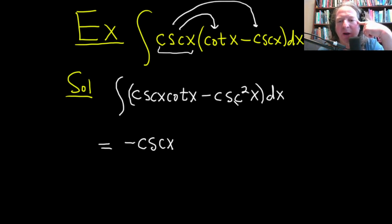And then here, what's a function whose derivative is cosecant squared? Well, the derivative of cotangent is negative cosecant squared. So this is going to be plus cotangent of x.